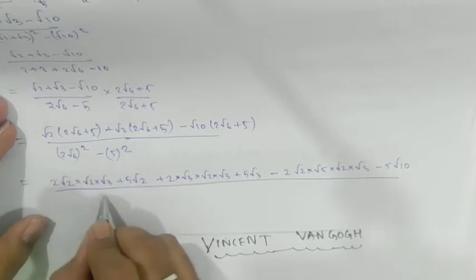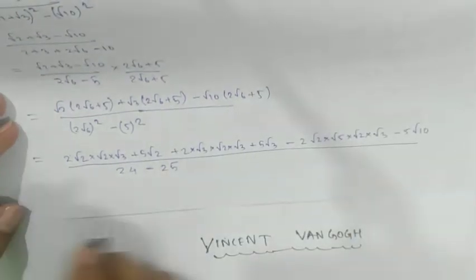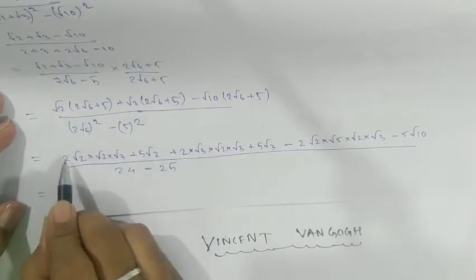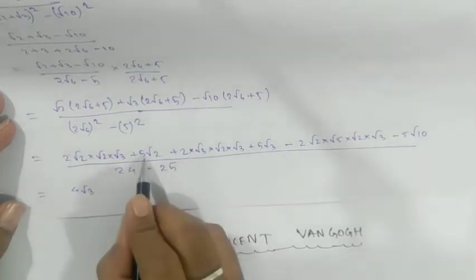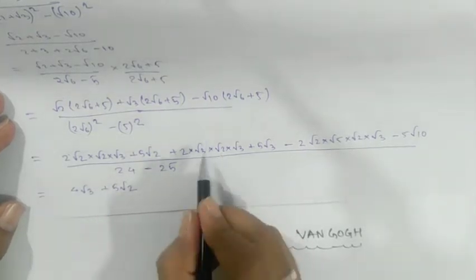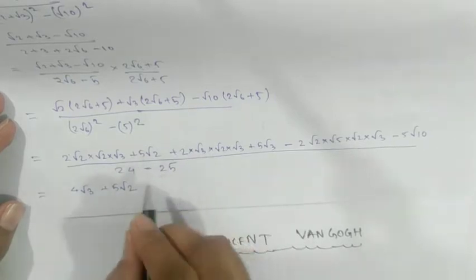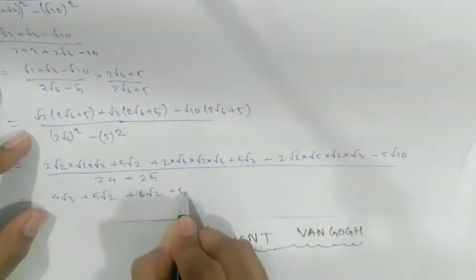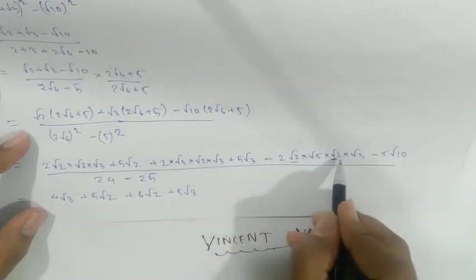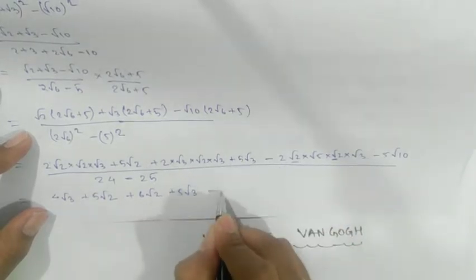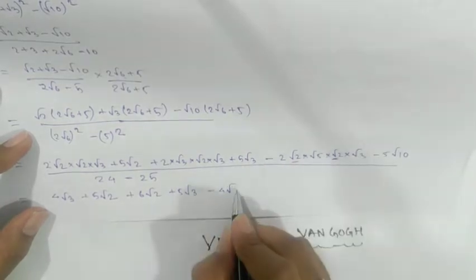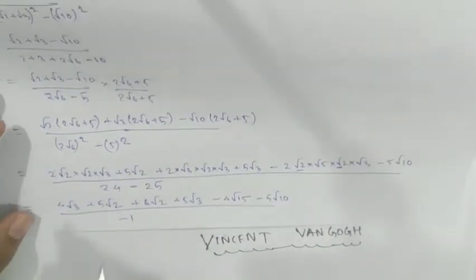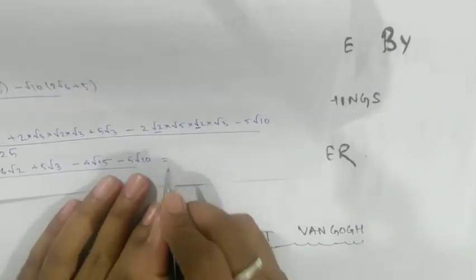The denominator gives (2√6)² - 5² = 24 - 25 = -1. Collecting all the numerator terms and then dividing by -1 changes the signs. So we get the fully rationalized result. The answer after simplification is determined by taking the minus sign upward.